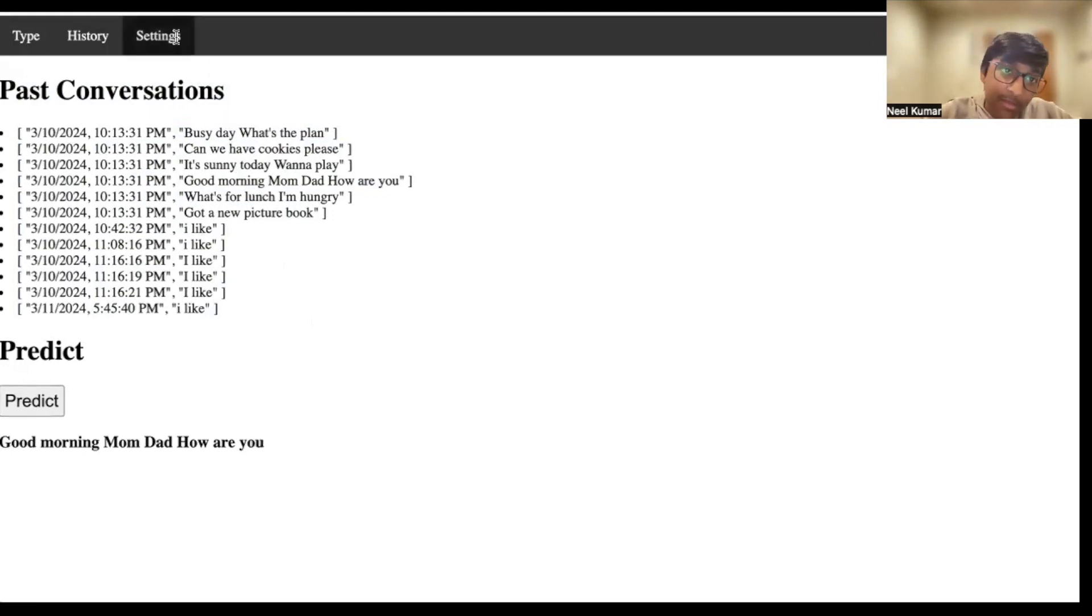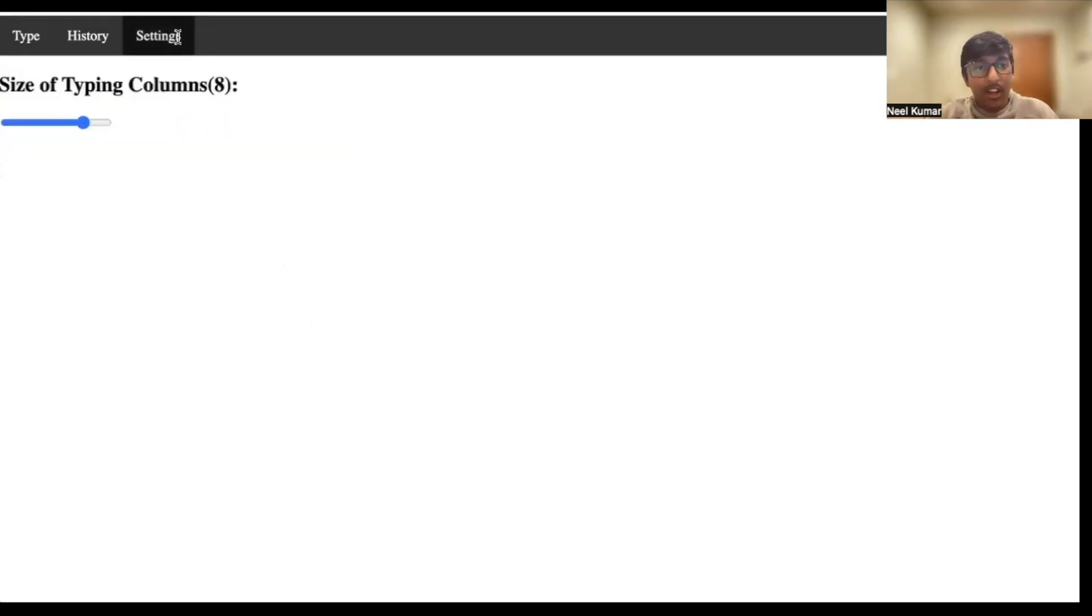Now since this is an app, we can do further customization. One very important one is the size of the interface. This slider controls how big the interface is and how big the cards are. Because if you have a bunch of cards filling the screen, that's great because it allows you to have more options, but it also gets confusing, especially for people with ASD who have more problems with attention.